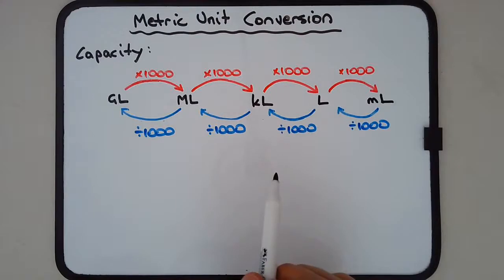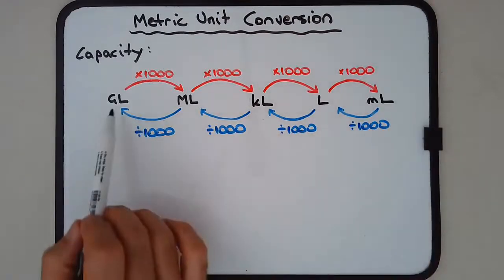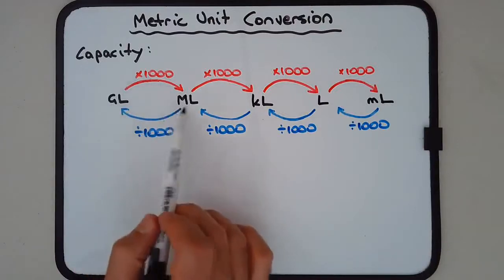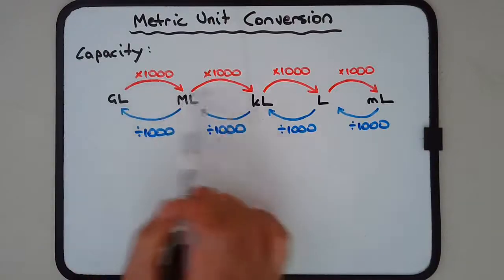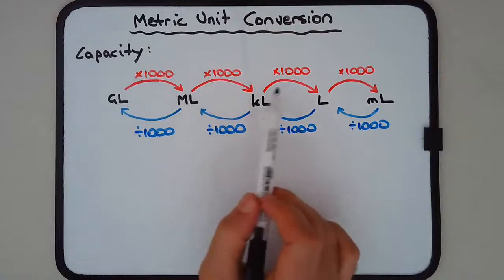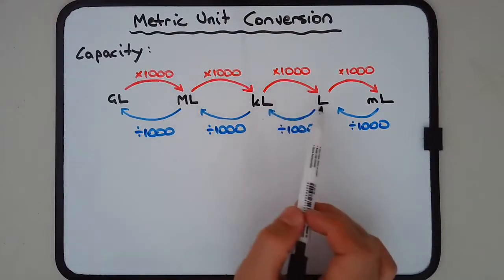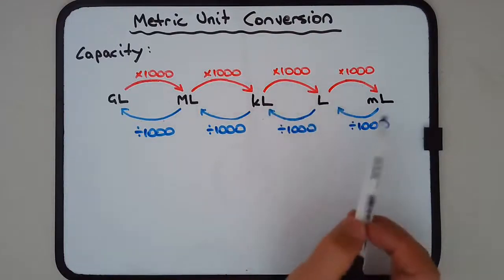Starting with gigaliters into megaliters, we multiply by a thousand. Megaliters into kiloliters, again multiply by a thousand. Kiloliters into liters, multiply by a thousand, and so on. Liters into milliliters, multiply by a thousand.